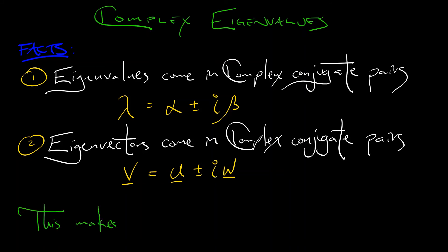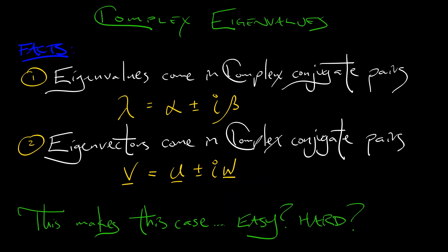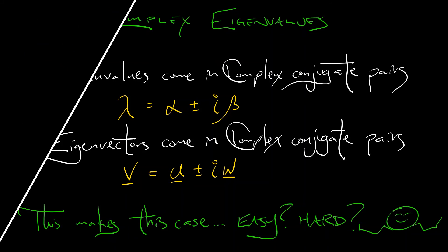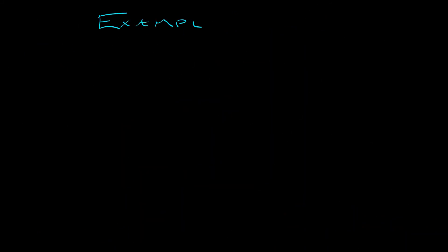This is really good news — it means that a lot of computations are easier than they would be otherwise. But most students really hate dealing with complex eigenvalues. Computing complex eigenvectors, you've got all those i's running around — it's a little bit ugly. I think looking at a couple of examples will help make those points clear. Let's begin with a simple example.